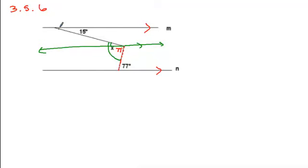Now if we use line m and this green line that we drew in as our parallel lines and then this as our transversal, we once again have alternate interior angles that are equal to each other. So that means this upper part of angle x is 15 degrees. So x together is going to be 15 plus 77 and that gives us our total answer of 92 degrees.